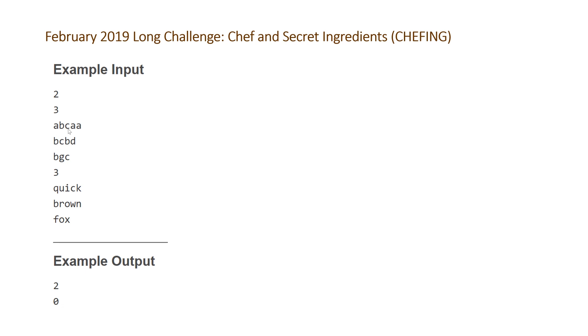You can see B here, B here, and B here, C here, C here, and C here. But none of the other ingredients, A, D, or G, occur in each of the dishes. For our second test case, we have zero special ingredients because none of the ingredients are common across every single one of the dishes.